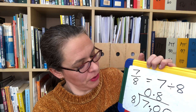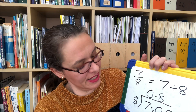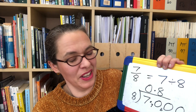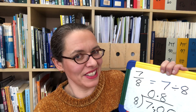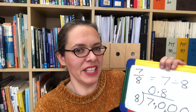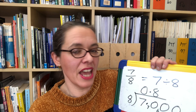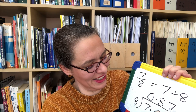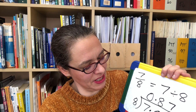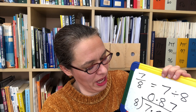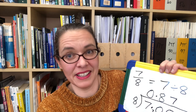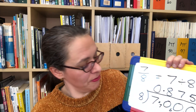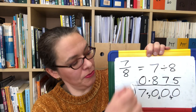We've used 64, so we have six left. How many eighths in 60? Seven eights are 56, so we get seven with four left over. How many eighths in 40? It's five. So the answer is 0.875.